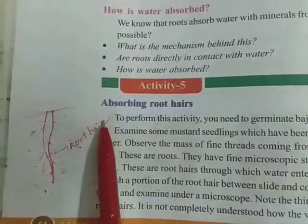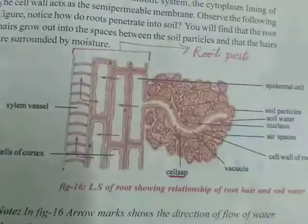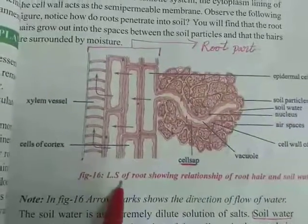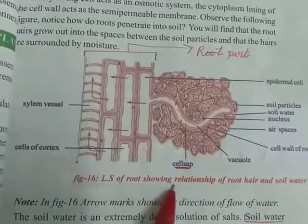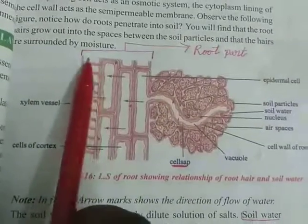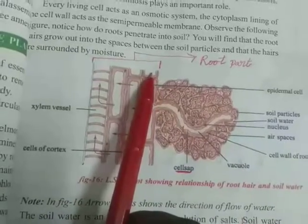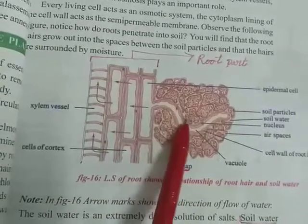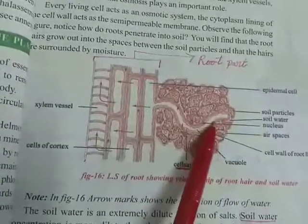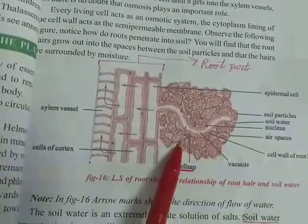Now let us look at figure 16, which shows a longitudinal section (LS) of roots showing the relationship of root hairs and soil water. From here to here, this total part is the root. The white colored hair-like structures are root hairs.